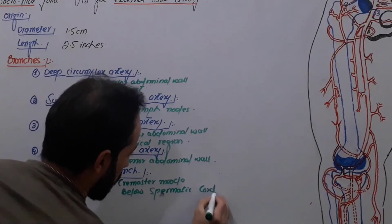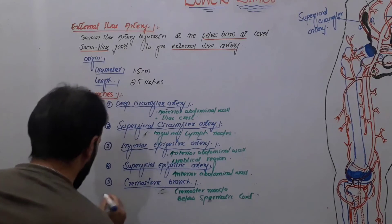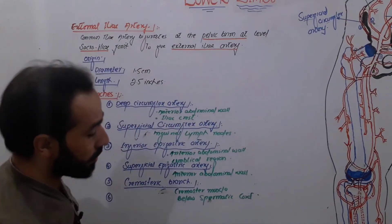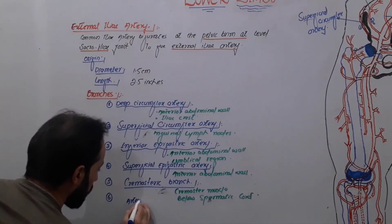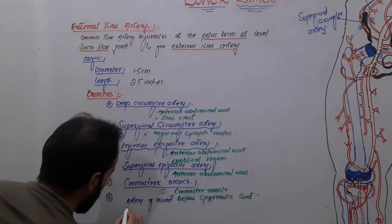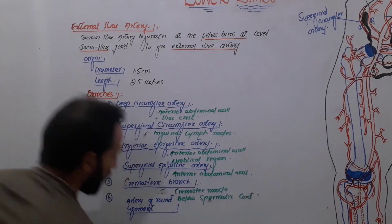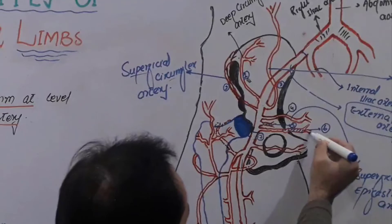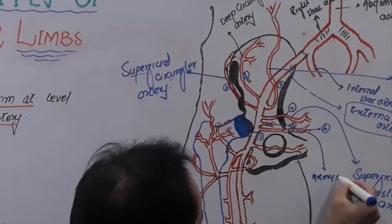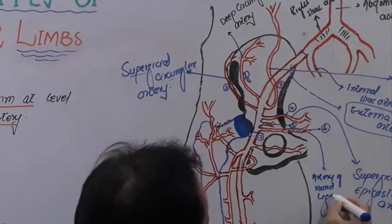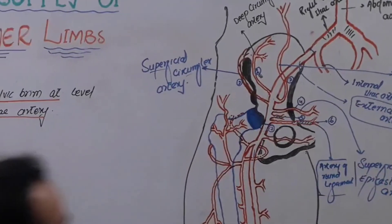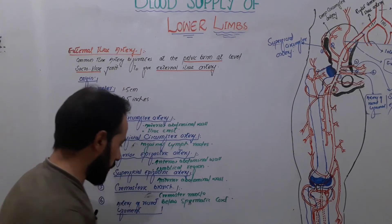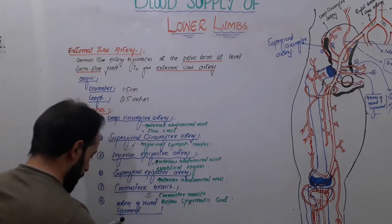The sixth branch from this artery is present in females only and is called the artery of the round ligament. This artery supplies blood to the round ligament of the uterus. Since males do not have a uterus, this artery is absent in men.